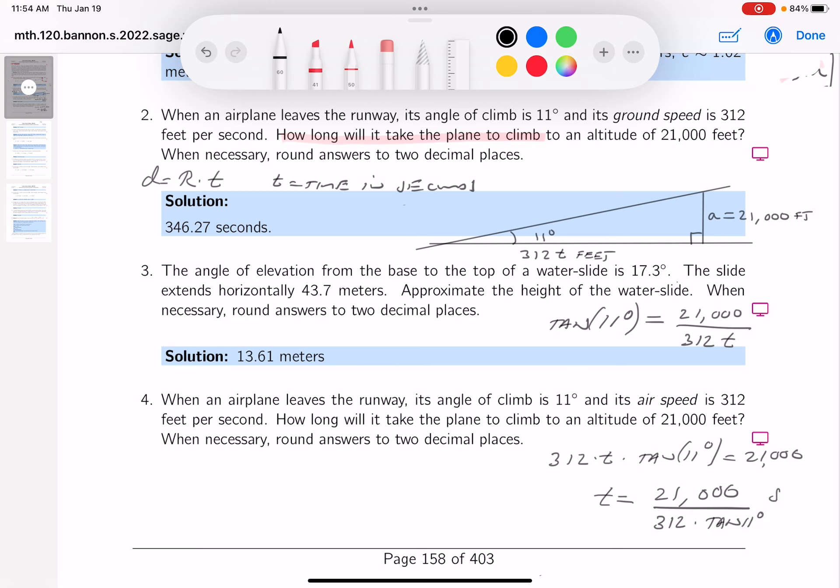If this is an exam question, this is the answer you'd write down. I do want to recommend you start using calculators to approximate these numbers. What do you do in a calculator? Type it in. Type the 21,000, divide it by 312, and divide it by tangent of 11 degrees. And your calculator should be in degree mode.